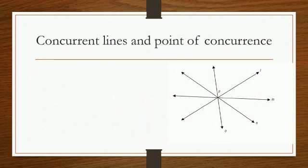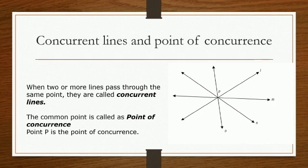Concurrent lines and point of concurrence. When two or more lines pass through the same point, they are called concurrent lines. The common point through which they pass is called their point of concurrence. In the figure alongside, lines L, M, N, and O are concurrent lines, and point P is the point of concurrence.